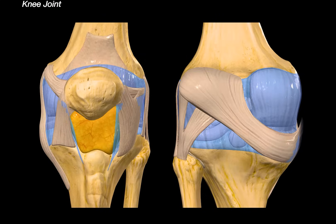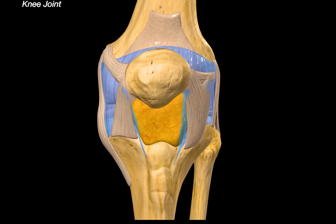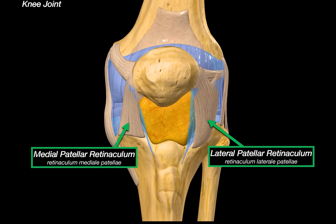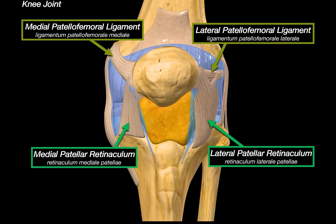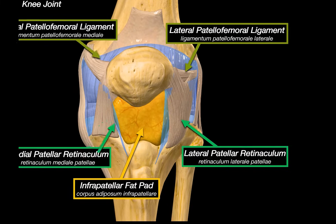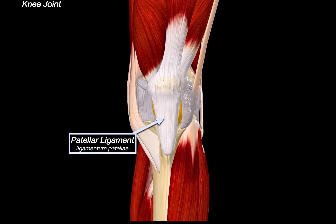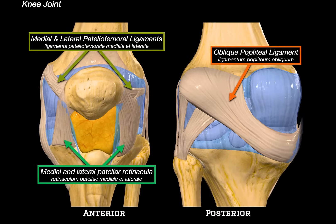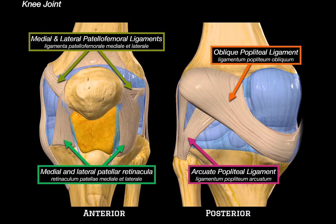Sitting on top of this fibrous capsule are ligaments that support the knee in all directions. We've got the medial and lateral patellar retinacula — the term retinaculum refers to a fibrous band that helps hold structures like tendons or the patella in place. Just above those are the medial and lateral patellofemoral ligaments, which help stabilize the patella. We can also see the infrapatellar fat pad, which cushions the front of the joint and fills the space beneath the patella. Sitting directly on top of the fat pad is the patellar ligament, which connects the apex of the patella to the tibial tuberosity and is essentially a continuation of the quadriceps tendon. On the backside of the knee, we can see the oblique popliteal ligament and the arcuate popliteal ligament, which reinforce the posterior capsule.